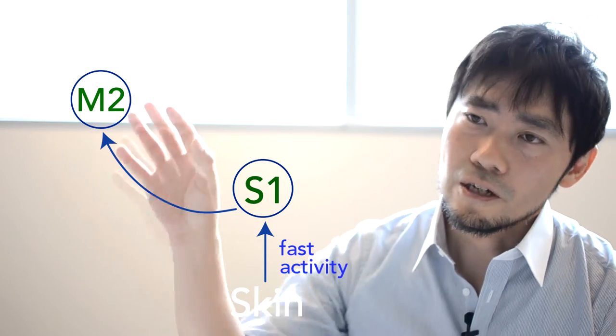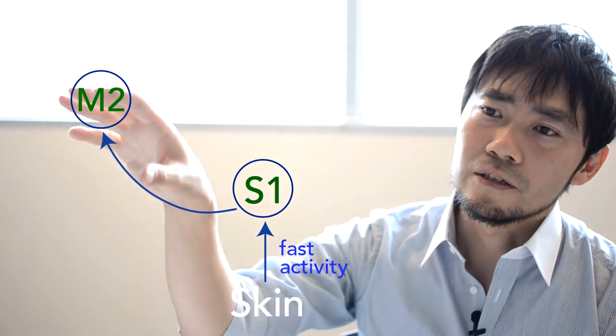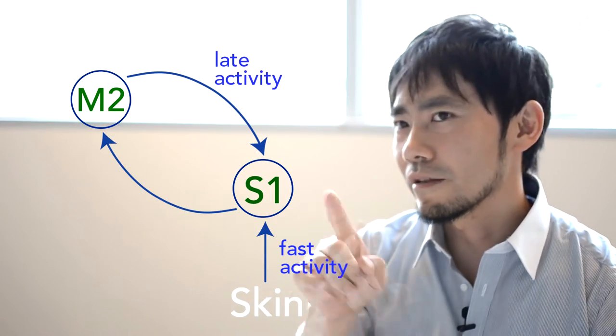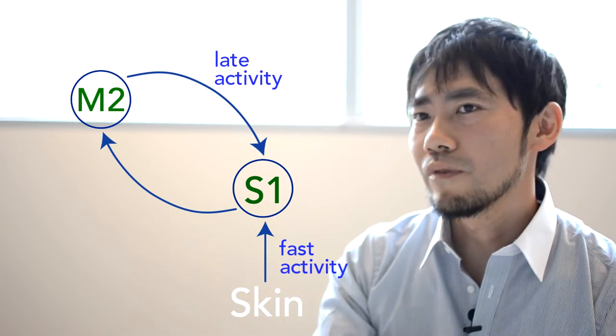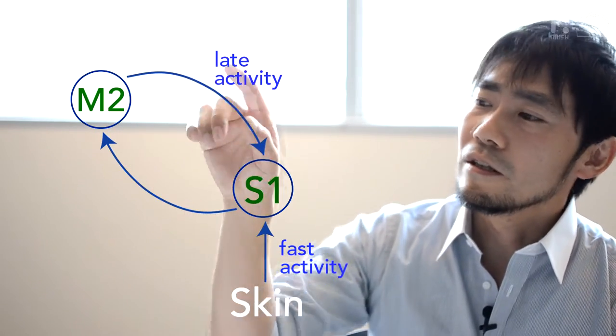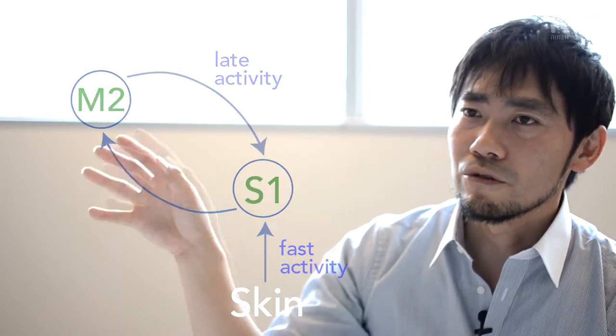And we found that the S1 and the higher order brain region, here secondary motor cortex called M2, make a reverberating circuit. It's a kind of ping-pong circuit, meaning that the information is sent back and forth between the two areas.